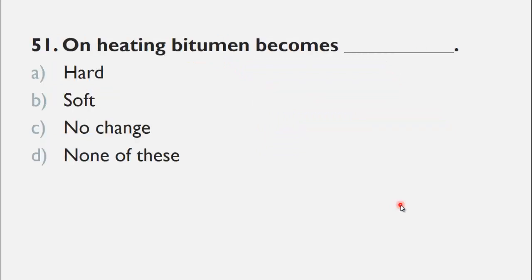MCQ number 51 is: On heating, bitumen becomes ___. The choices are A) hard, B) soft, C) no change, and D) none of these. So the right choice for this question is B, soft, because we know that when we heat bitumen it becomes soft.